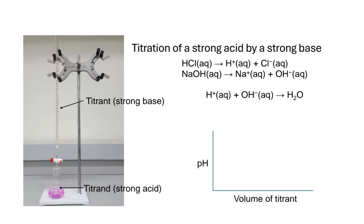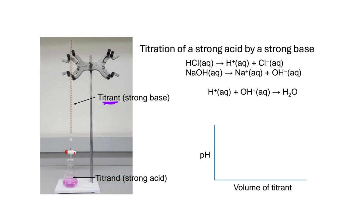The terms I'm going to use with titrations include the term titrant. If we're looking at the titration of a strong acid by a strong base, the strong base is going to be the titrant — it's what is in a burette. The titrand, a term you may see less often, would be the strong acid, and it's what goes in an Erlenmeyer flask beneath the burette.